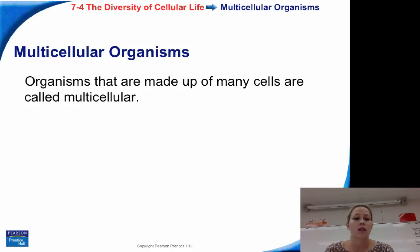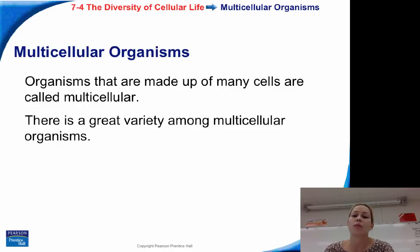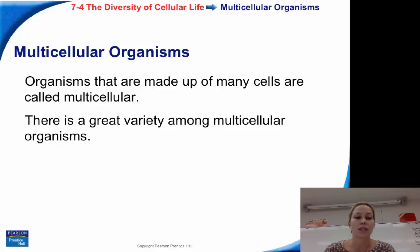Multicellular organisms are organisms that are made up of many cells, and they're called multicellular. There is a great variety among multicellular organisms. Humans, for example, are a multicellular organism. Your dog might be another example, and a grizzly bear might be yet another example of a multicellular organism.